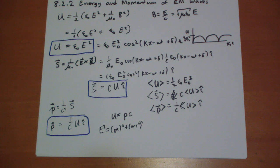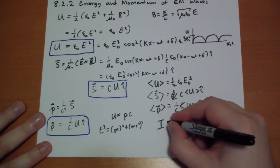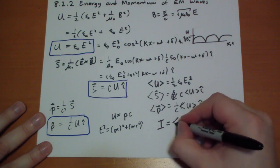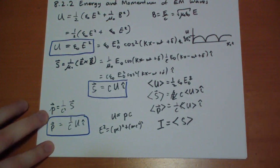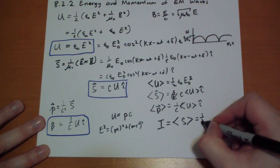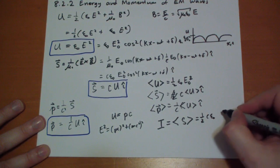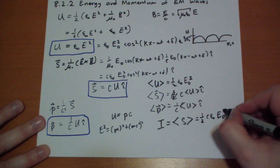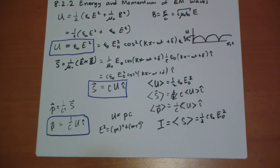The reason why we're talking about average all of a sudden is because I want to introduce intensity. Intensity is simply the average of S, the magnitude of the Poynting vector. And so, in the case of an electromagnetic field, the intensity is simply one half c epsilon naught, the maximum electric field squared. That's the intensity that we get.